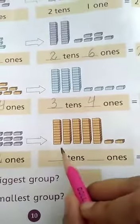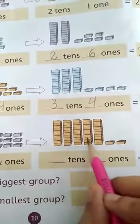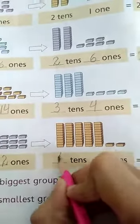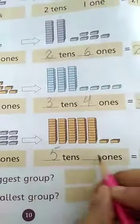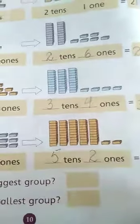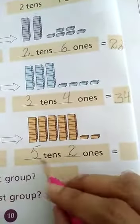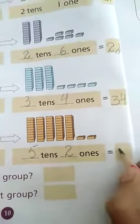He takes 10 ones and puts them in the tens column. Now Adil has 1, 2, 3, 4, 5... 5 tens and 2 ones. So 5 tens and 2 ones is equal to 52.